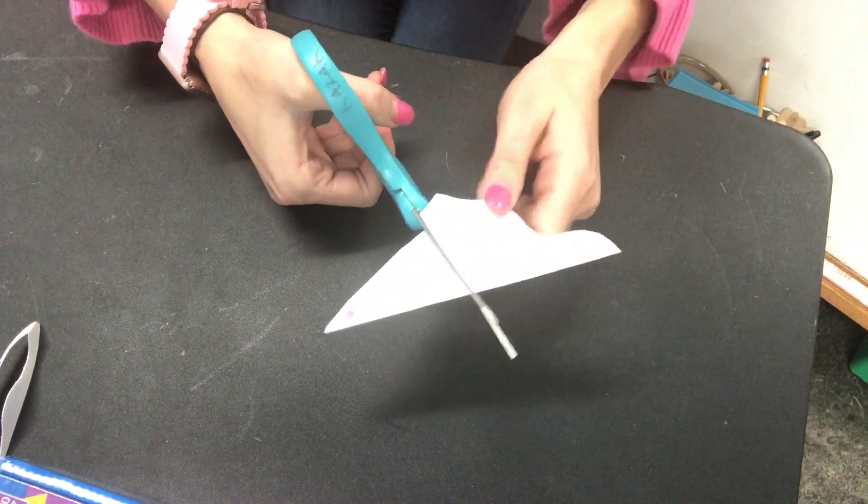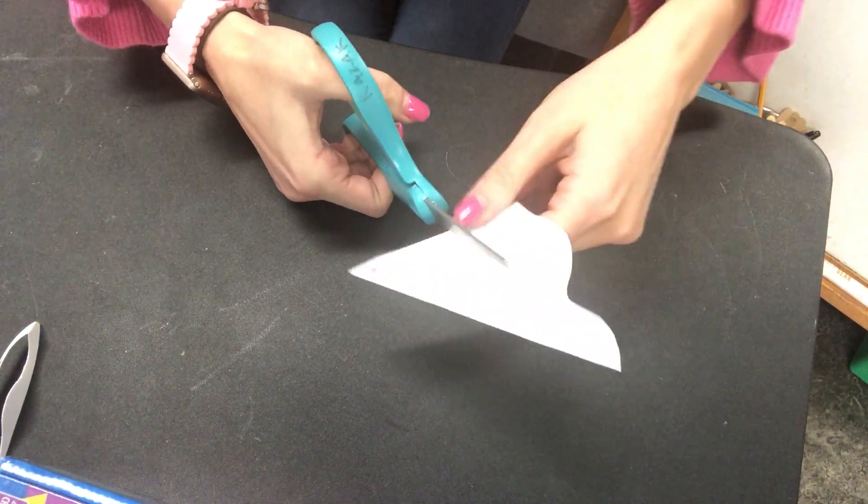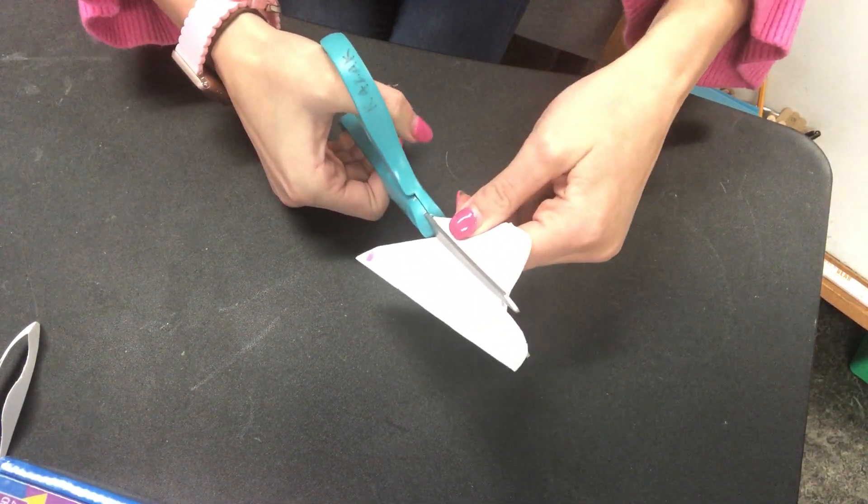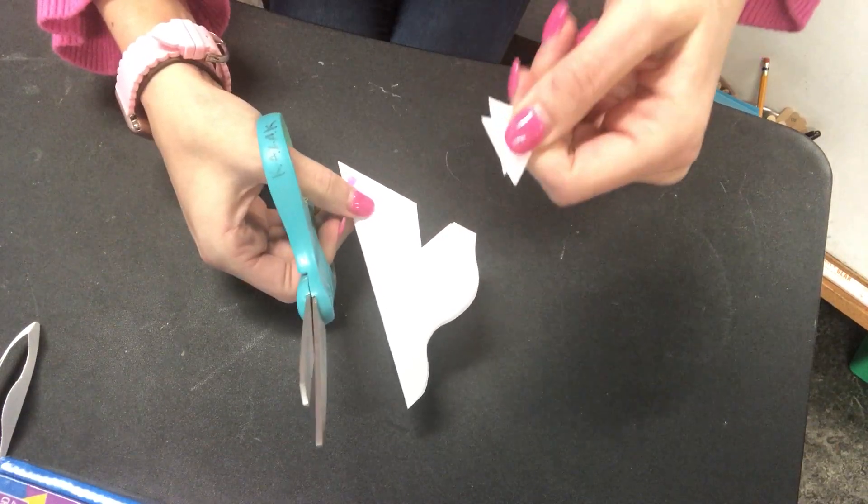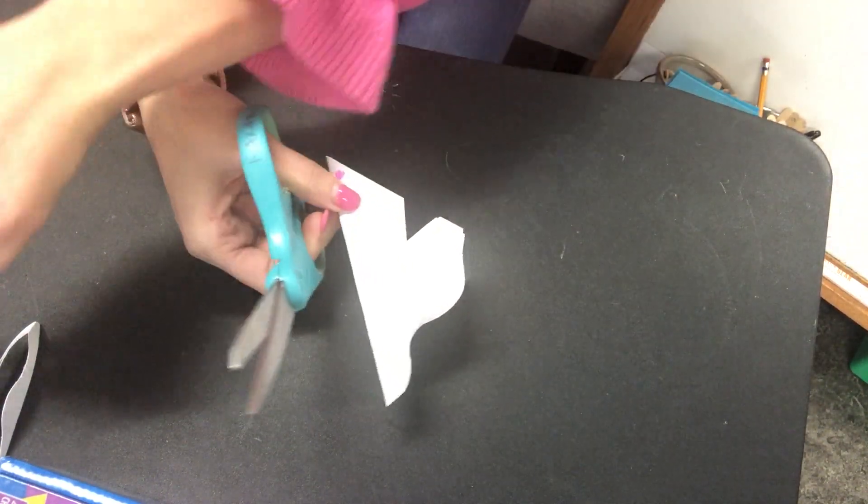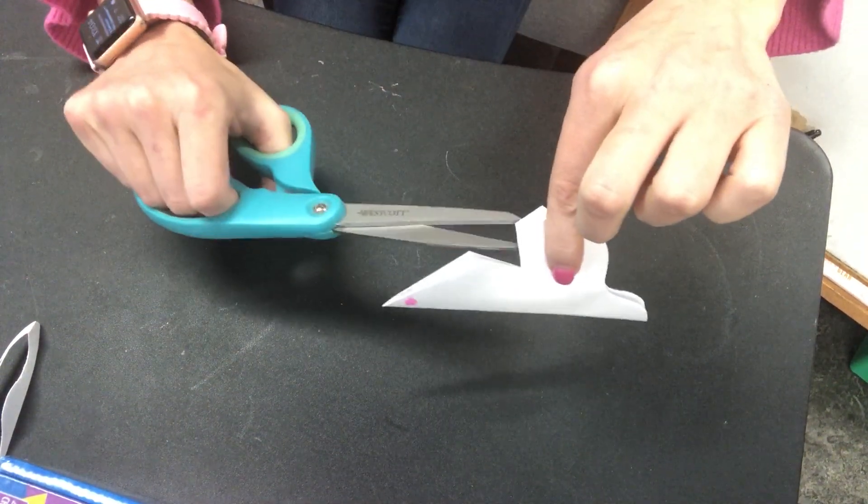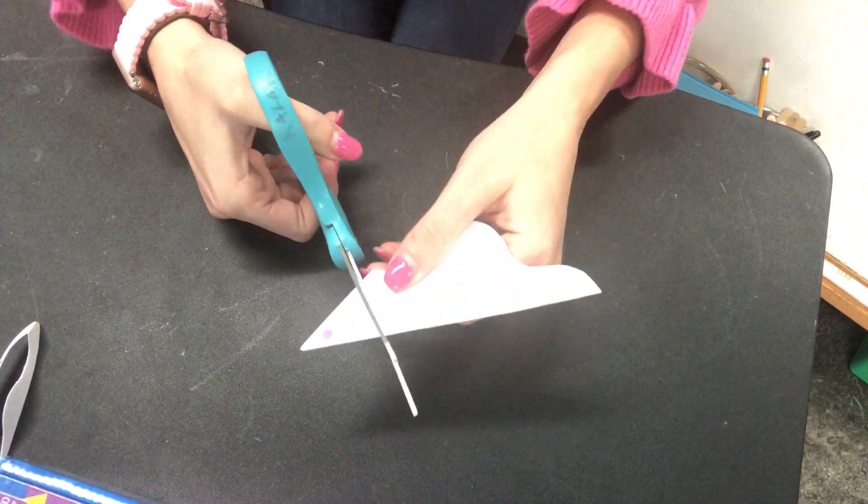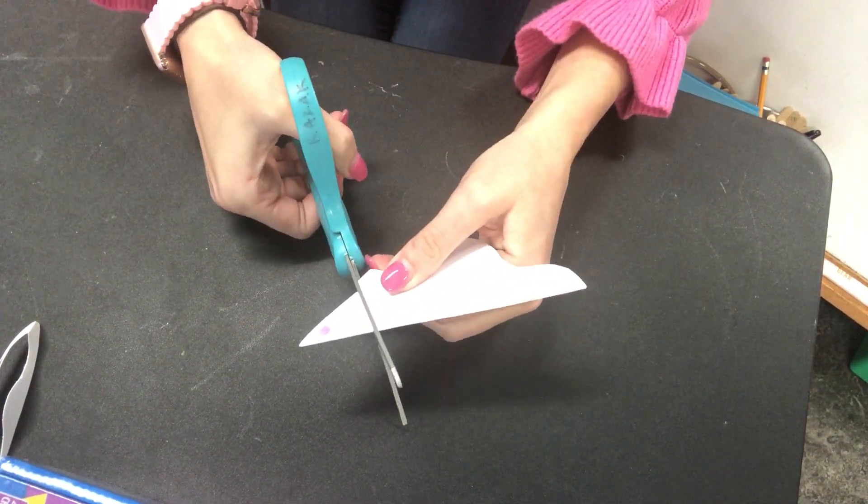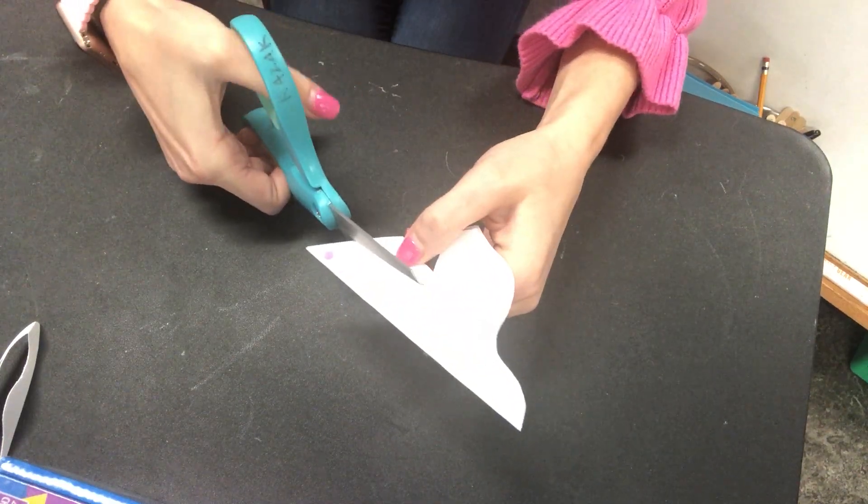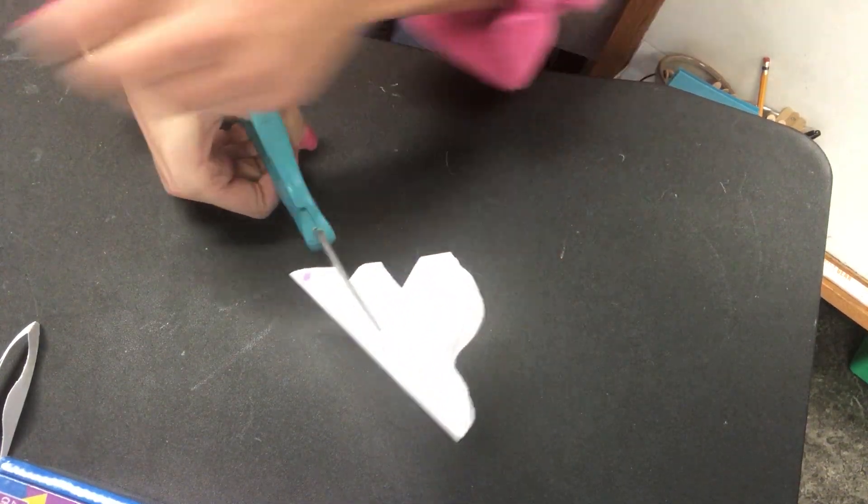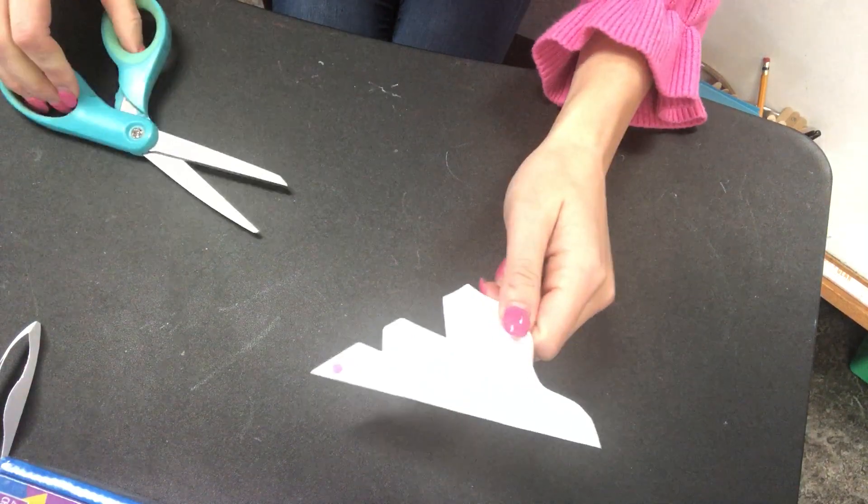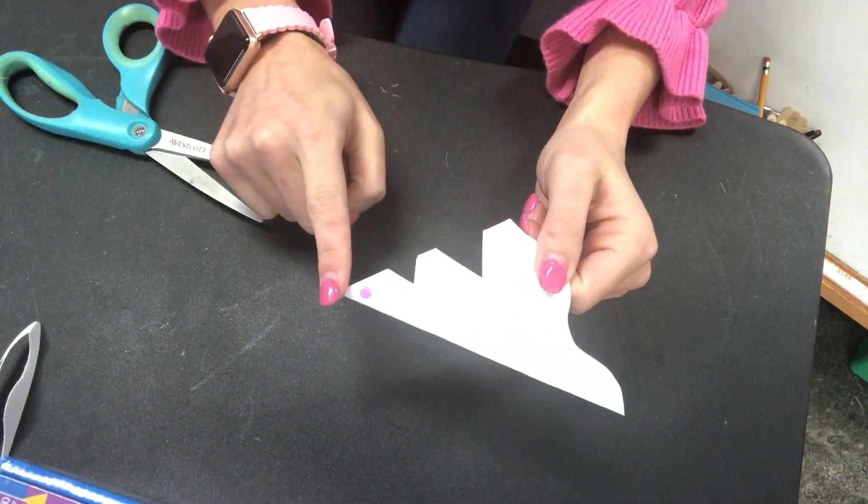Now don't cut all the way across. Just cut on each side. And you want to cut chunks out so that they're missing. I want there to be missing parts of my snowflake. How about a little triangle now? I've cut out shapes on this side.